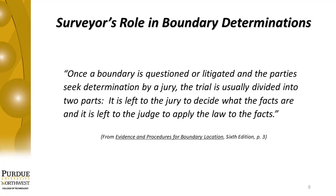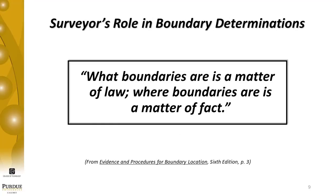Once a boundary is questioned or litigated and parties seek determination by a jury, the trial is usually divided into two parts. It is left to the jury to decide what the facts are, and to the judge to apply the law to the facts. There's a key statement: what boundaries are is a matter of law, and where boundaries are is a matter of fact. Thus in a trial, the jury decides where an original monument position was located based on evidence the surveyor used to formulate an opinion. The judge decides whether the monument or measurement is controlling as a matter of evidence presented at trial.